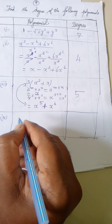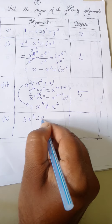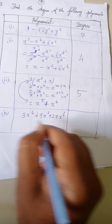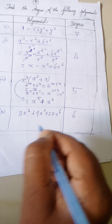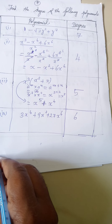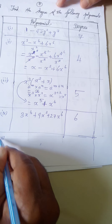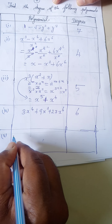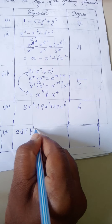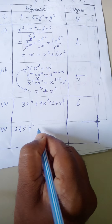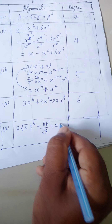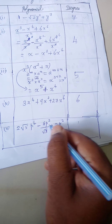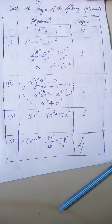Fourth one: 3 x power 4 plus 9 x square plus 27 x power 6. The highest degree is 6. Fifth one: 2 root 5 p power 4 minus 8 p cube by root 3 plus 2 p square by 7. The highest degree here is 4. So the degree is 4.